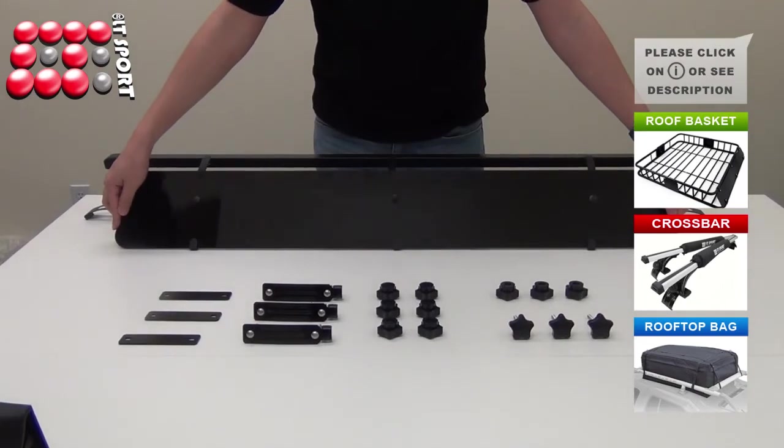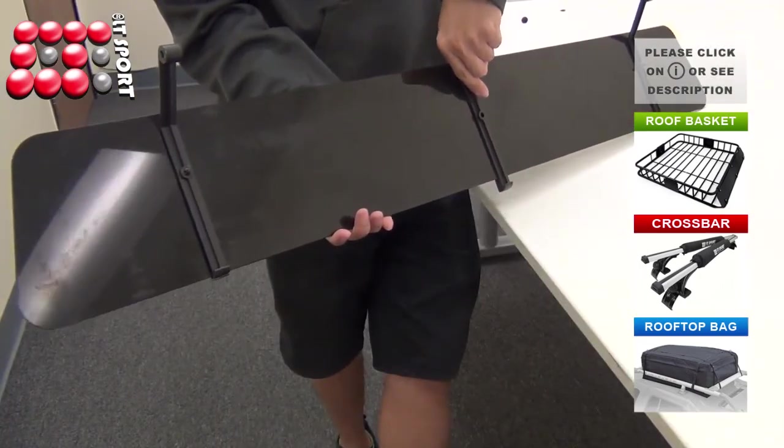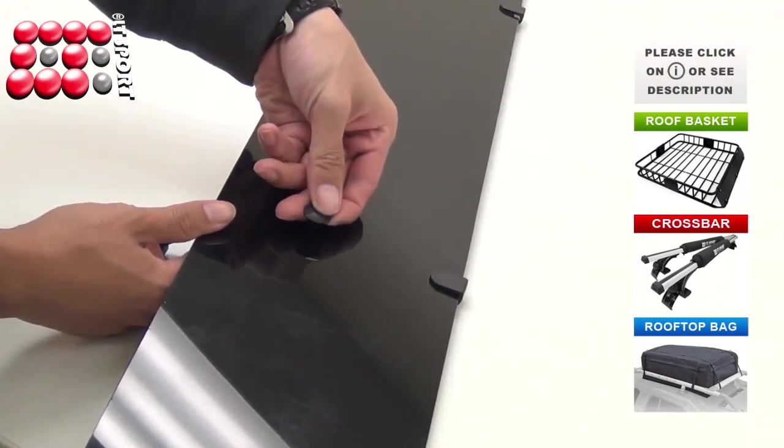The installation is easy and tool-free. Align the frame and push in the plastic pins through the holes on the fairing.